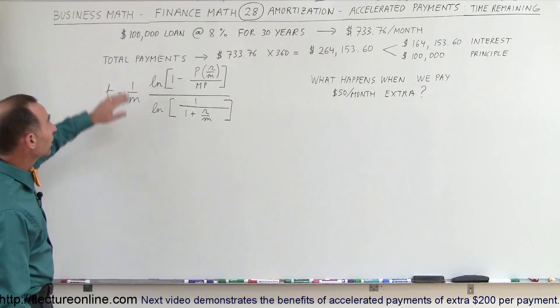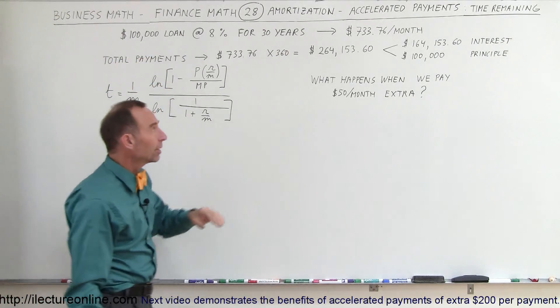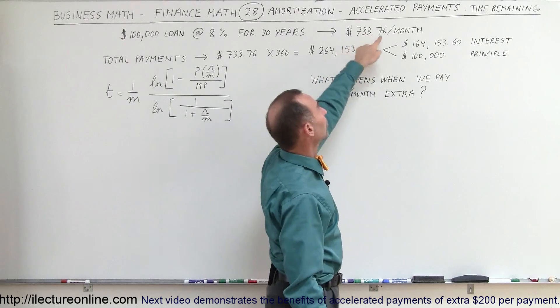So let's say that we have a $100,000 loan, 8% interest, and we have it for 30 years. Our monthly payments would be $733.76.